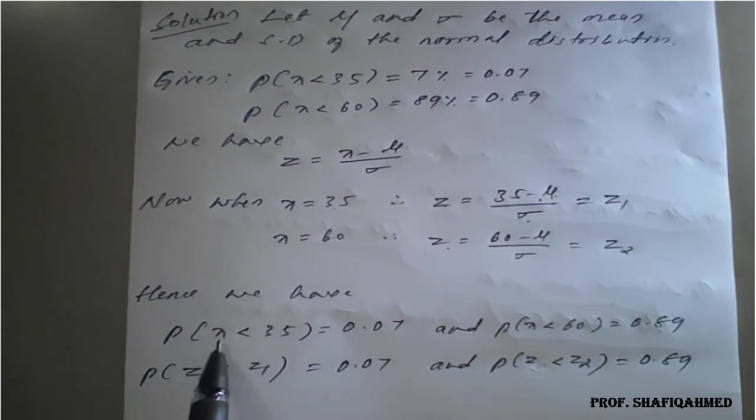This can be written as what here? Instead of X, it will be Z. Instead of 35, it will become what here? Z1. Similarly, the same expression we will get here also.